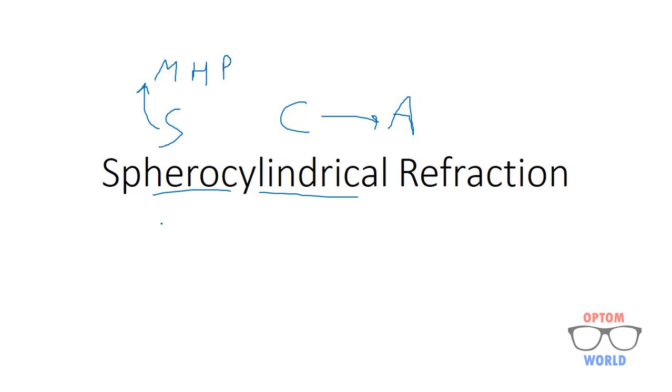The first type of refraction we discussed previously was BVS refraction, in which we use only spherical lenses to correct myopia, hypermetropia, and presbyopia. In some cases, you will observe that with the best vision sphere, the desired visual acuity is not obtained, which is 6 by 6.